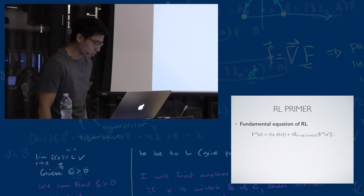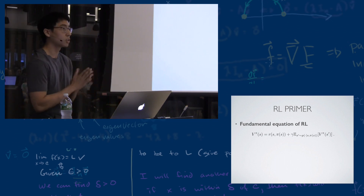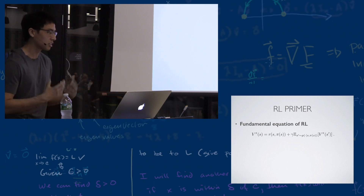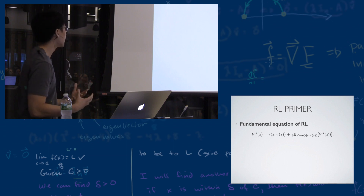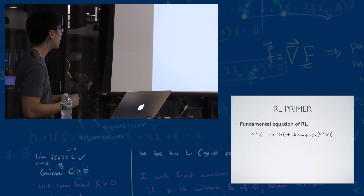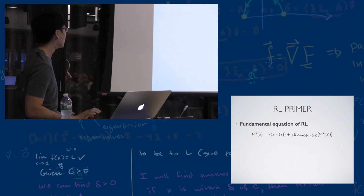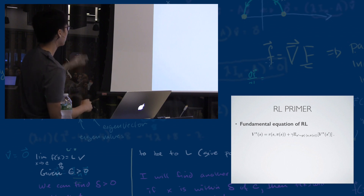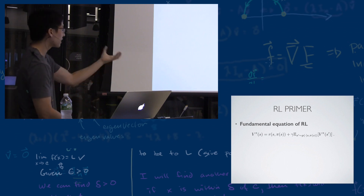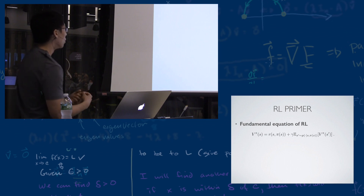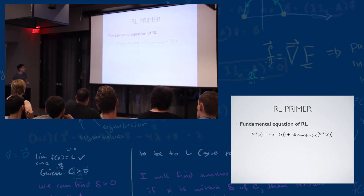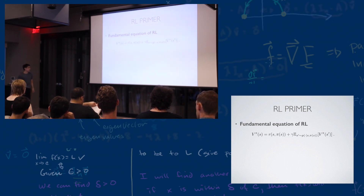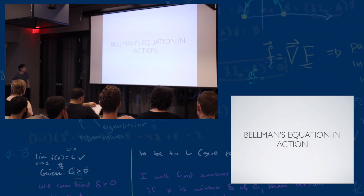There is one overarching principle in reinforcement learning that drives all the algorithms — I'll call it the fundamental equation of RL, also known as the Bellman equation. A candidate function V-pi is the solution if it satisfies this fixed-point equation: the current value equals a one-step rollout, where you play the policy on the current state and then ask the value function for the expected reward over all states you can transition to. Solving RL largely comes down to solving this equation.